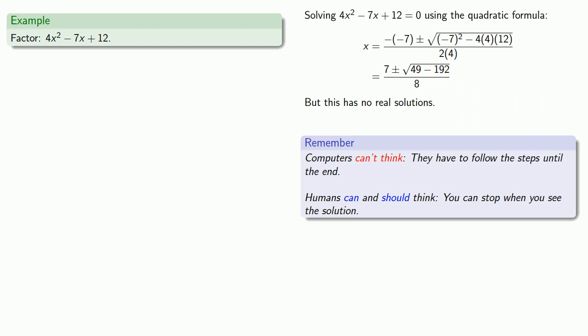That's important because we want to find factors that are rational, and a non-real factor isn't rational. So we might say that since 4x squared minus 7x plus 12 equals 0 has no real solutions, our polynomial cannot be factored.